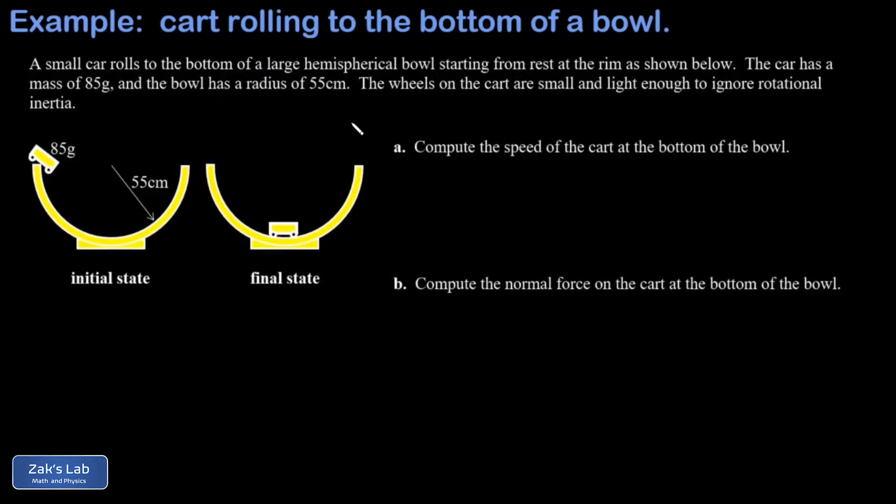In part A we want to compute the speed of the cart at the bottom of the bowl. So this is just an energy conservation problem with gravitational potential energy converting into kinetic energy.